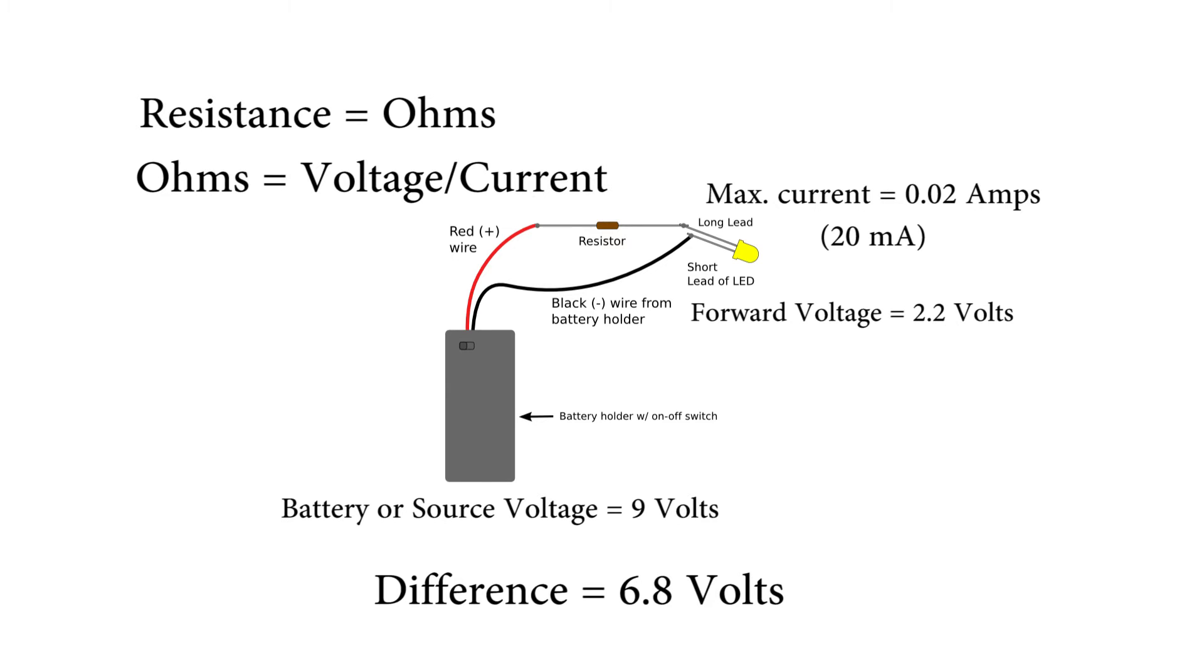So we can figure out what value of resistor to get. Since the voltage we want to drop across the resistor is 6.8 volts, and the current we want running through the resistor is 0.02 amps, we simply divide 6.8 by 0.02 and we get 340.